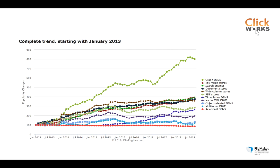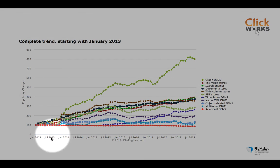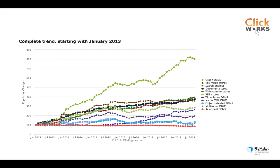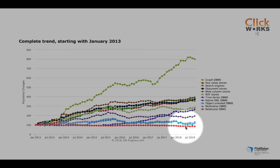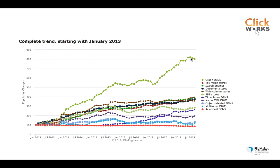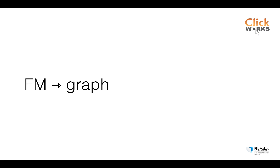Graph databases are becoming a trend only fairly recently — just a couple of years ago they started to take off. Data from db-engines.com measures database popularity based on social media mentions. The red line represents traditional relational databases like Oracle, SQL Server, MySQL, and FileMaker — they are the biggest and they're not going away, but their popularity isn't changing much. Graph databases, by contrast, are really rising. With that, I'd like to end this first video of the series. The next video will show you how to import FileMaker data into a graph.